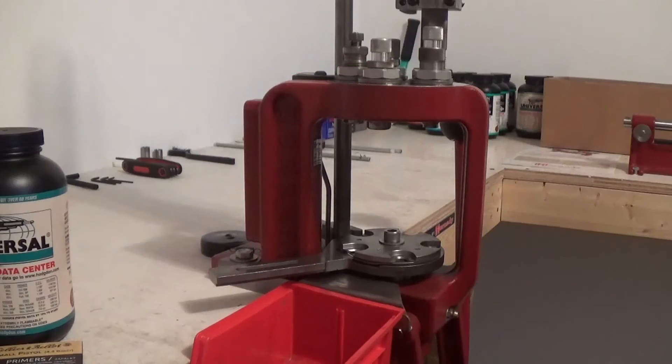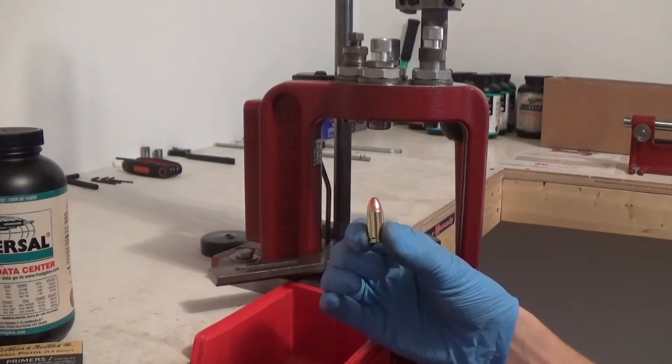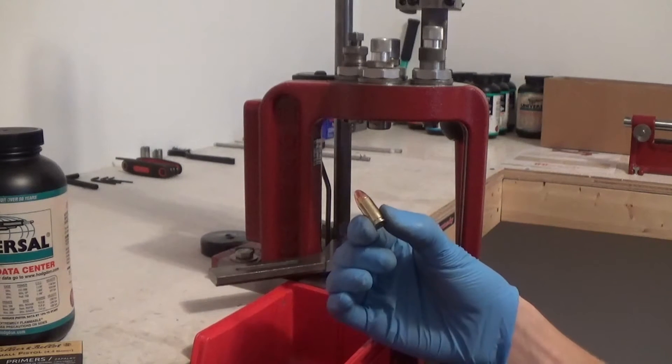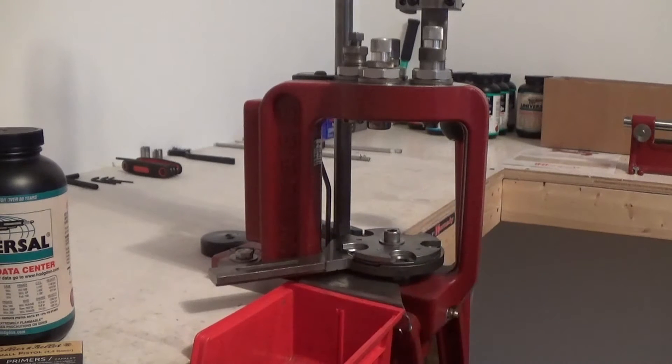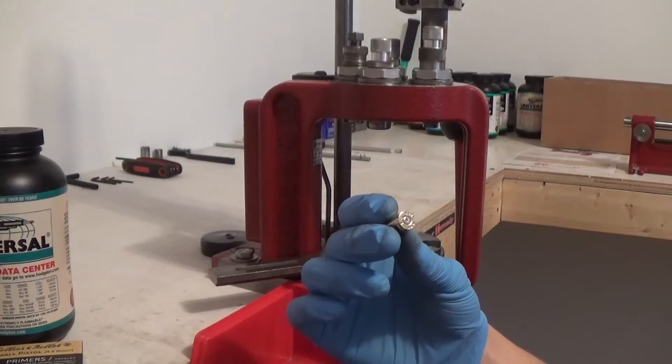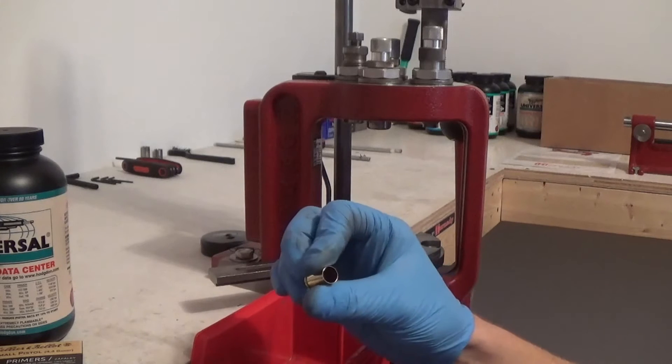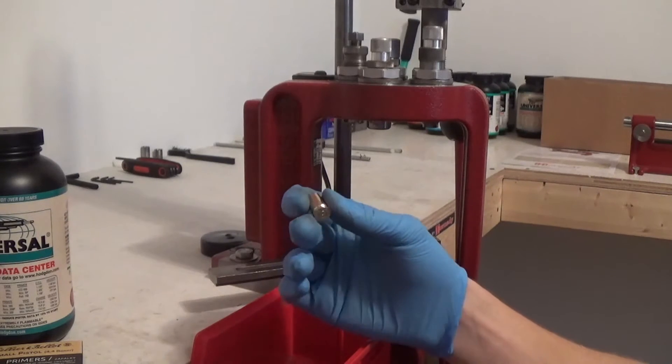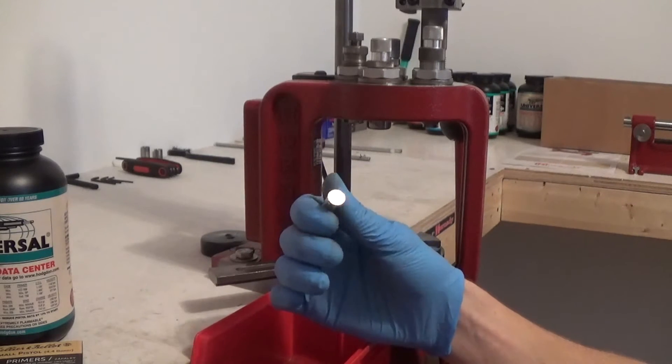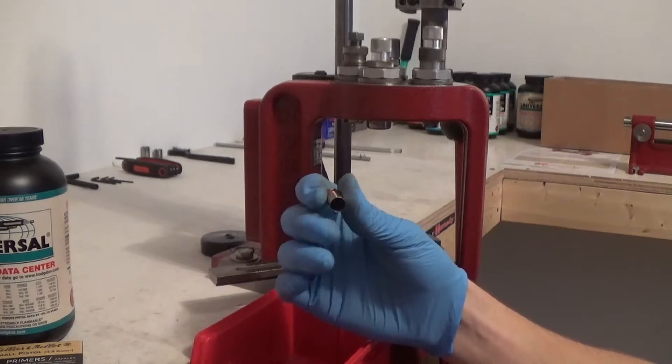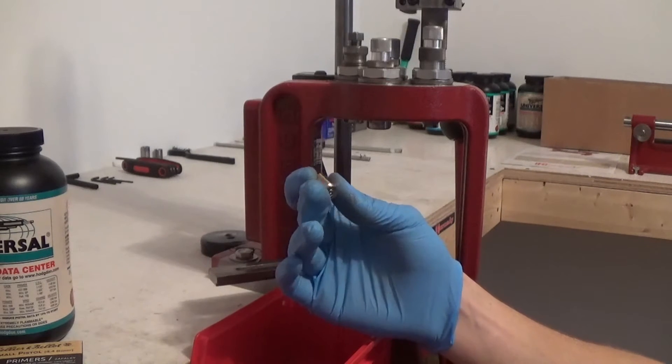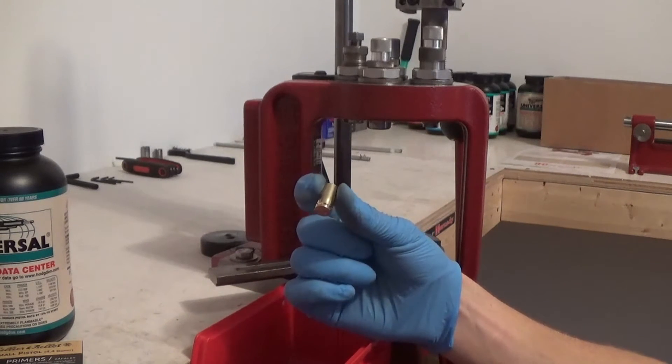Welcome back everybody. Today's video is going to be on 9mm Luger. I'm going to go over the steps and the process of reloading from a spent piece of brass with a spent primer. It's been polished in the tumbler and we're going to take it from an empty cartridge and reload it till we have our finished product.